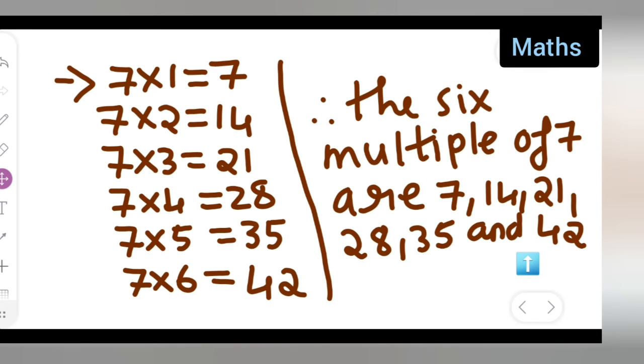You start from 7 times 1 is 7, 7 times 2 is 14, 7 times 3 is 21, 7 times 4 is 28, 7 times 5 is 35, 7 times 6 is 42.